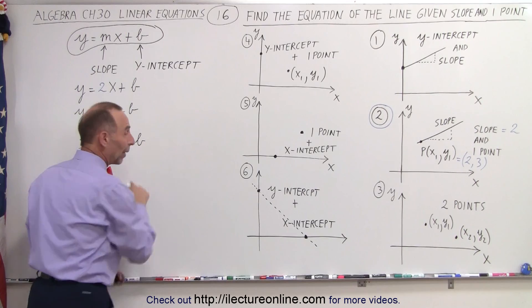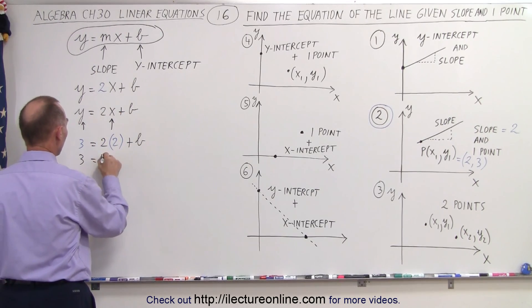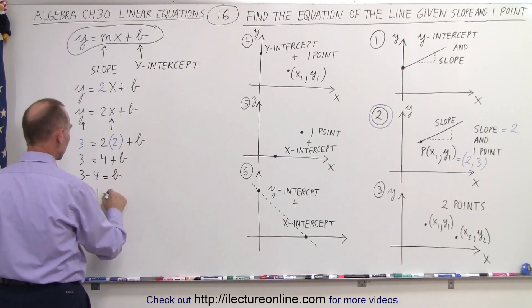And now we can solve for the y-intercept, solving for b. So this becomes 3 is equal to 4 plus b. Bring the 4 across. 3 minus 4 is equal to b, or negative 1 equals b.